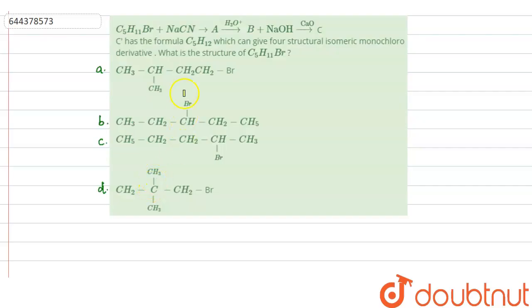Hello everyone, let us solve this question. The question says that C5H11Br plus NaCN gives A, which on hydrolysis gives B plus NaOH in presence of CaO, we get C. C has a formula C5H12 which can give 4 structural isomeric monochloro derivative. What is the structure of C5H11Br?